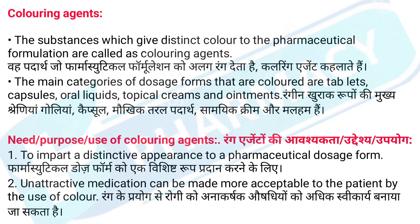Coloring agents: the substances which give distinct color to the pharmaceutical formulation are called as coloring agents. The main categories of dosage forms that are colored are tablets, capsules, oral liquids, topical creams and ointments. Rangin khuraak rupon ki mukhya shreniya goliya, capsule, mokhik taral padart, samayek cream aur malham hai.